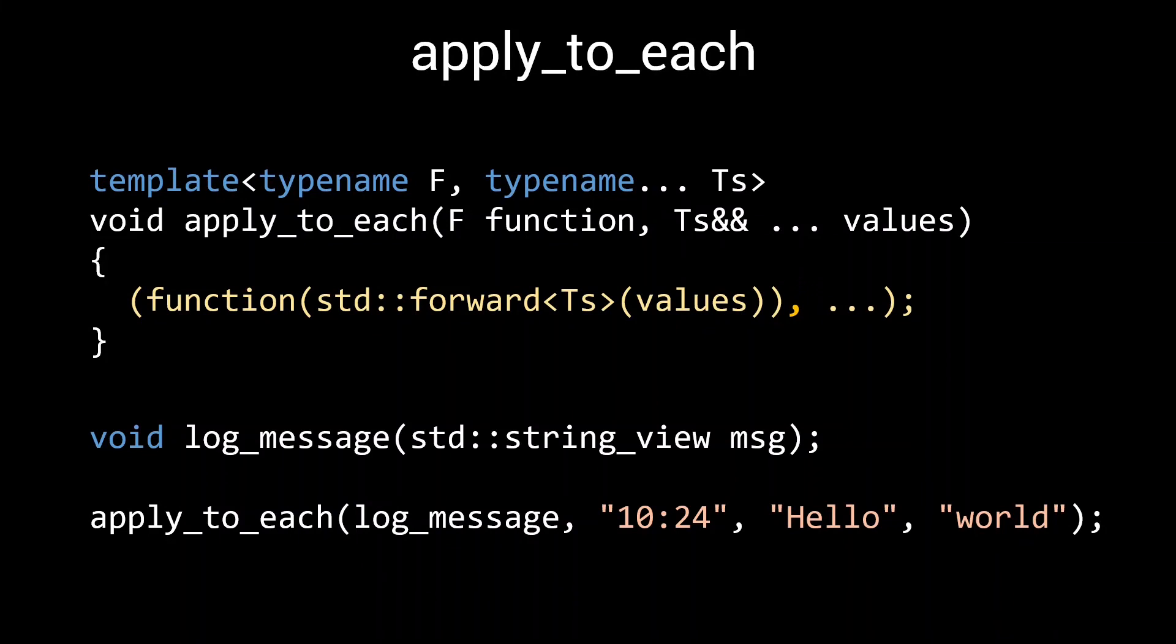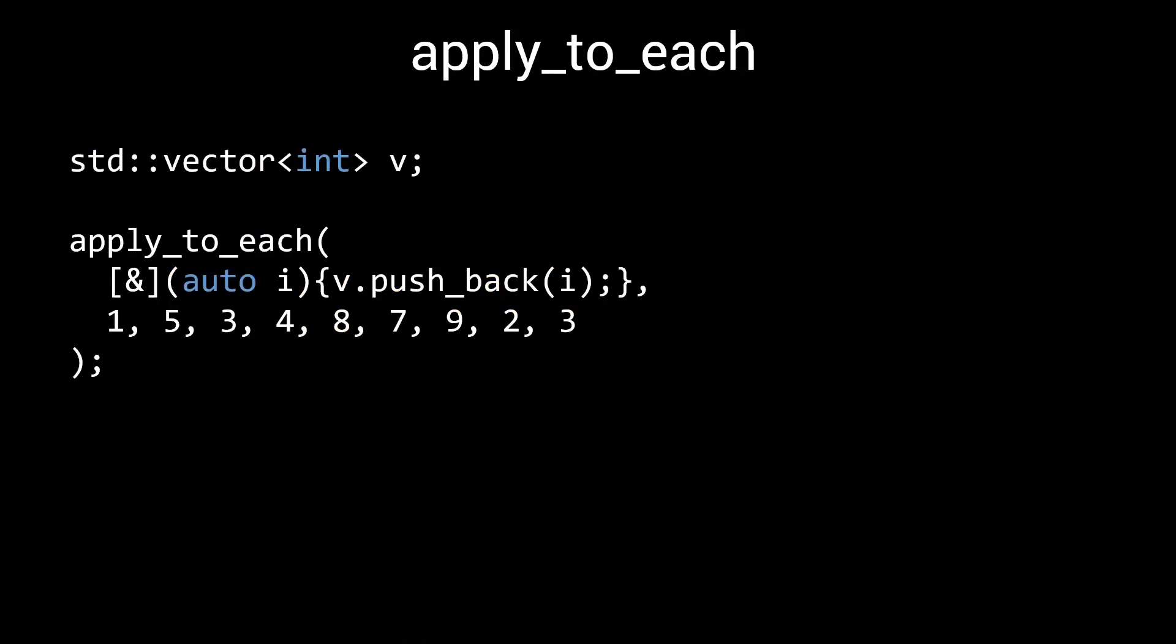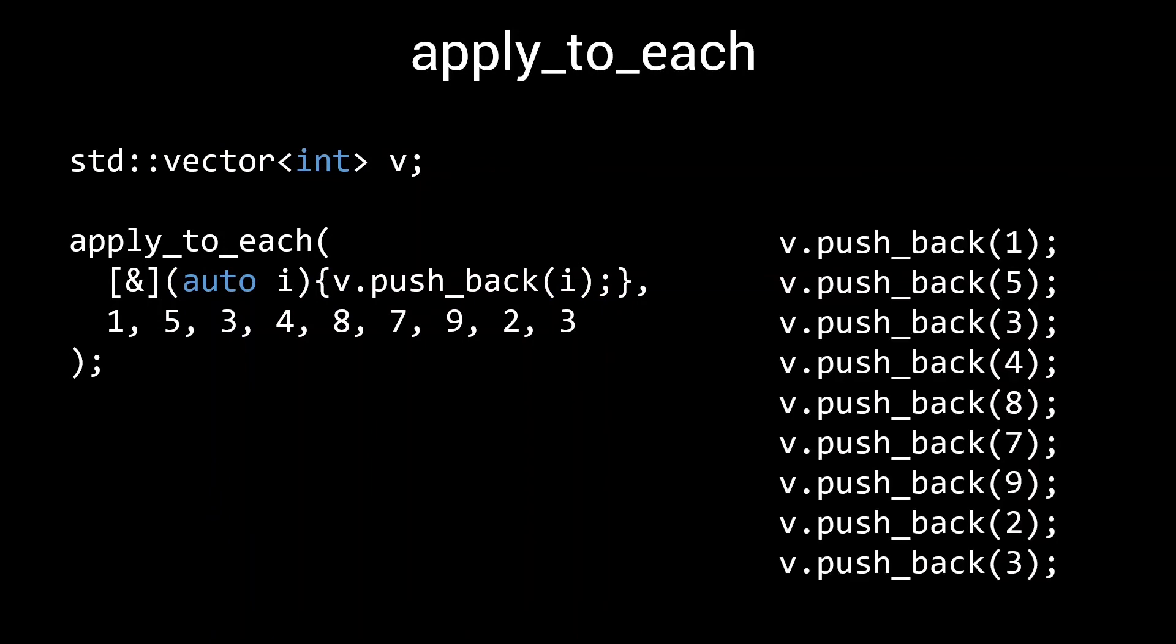As a matter of fact, we can recreate our previous generalized pushback function by passing a small lambda that captures our container. This little snippet on the left does exactly the same as all those pushbacks on the right, but it is a lot more concise and expressive.